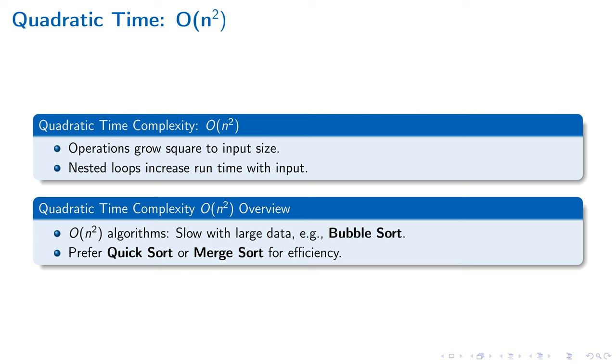This distinction underlines the importance of understanding algorithmic complexities to ensure the scalability and efficiency of applications, highlighting the critical role of algorithm selection in software development.